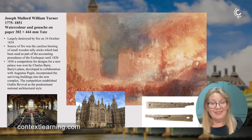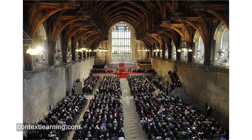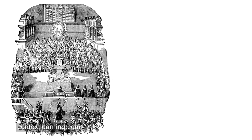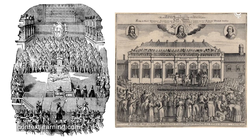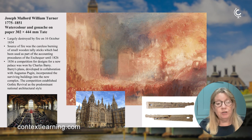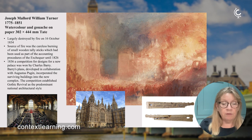Westminster Hall is enormous — goodness knows how impressive it must have seemed when first built to that scale in the 11th century. It's where the late Queen's body lay in state, as did Winston Churchill's and the Queen Mother's. It was used for famous historical events like the trial of Charles I, which resulted in his execution. Today, when not used for royal lying-in-state, it accommodates visiting dignitaries — such as the Pope or Barack Obama — addressing both Houses.